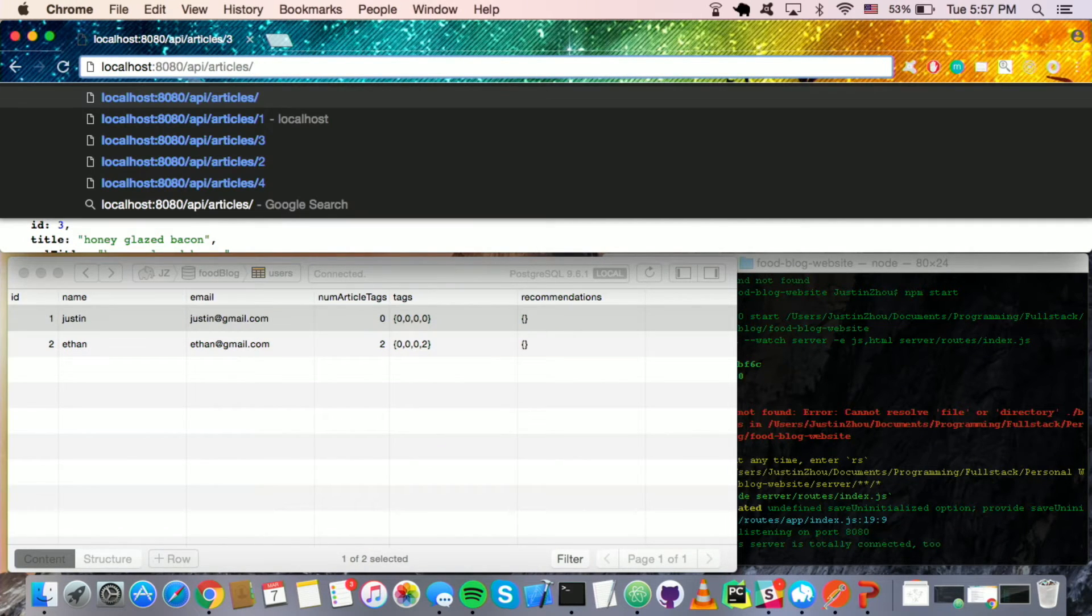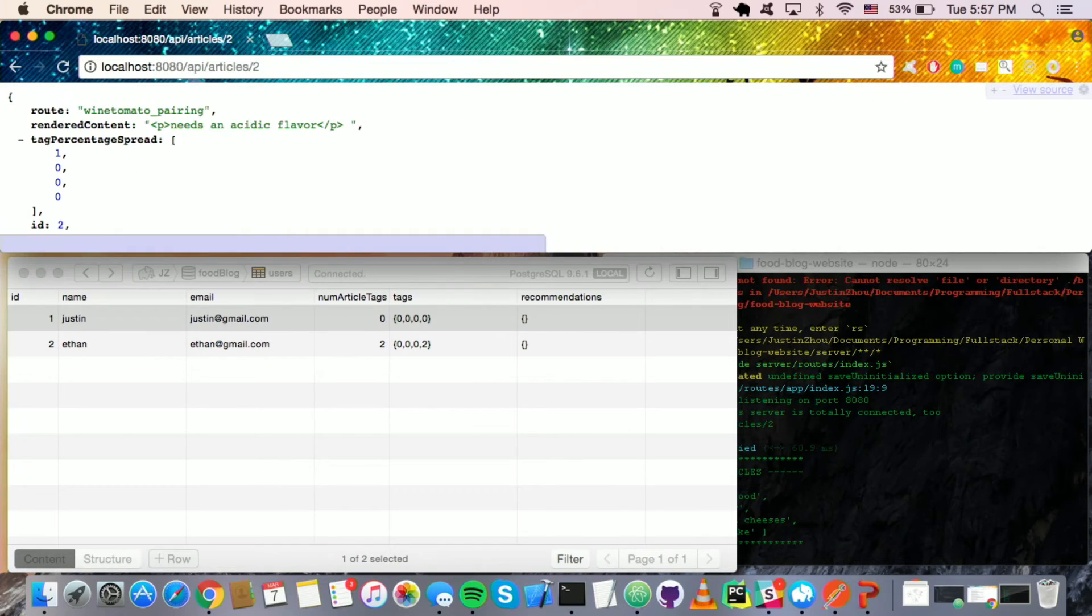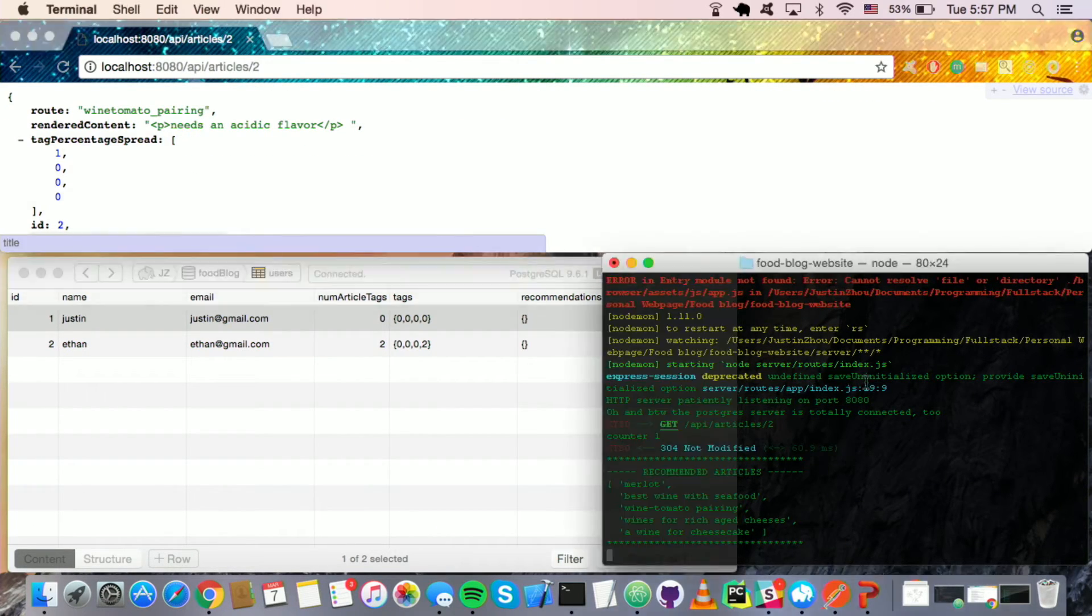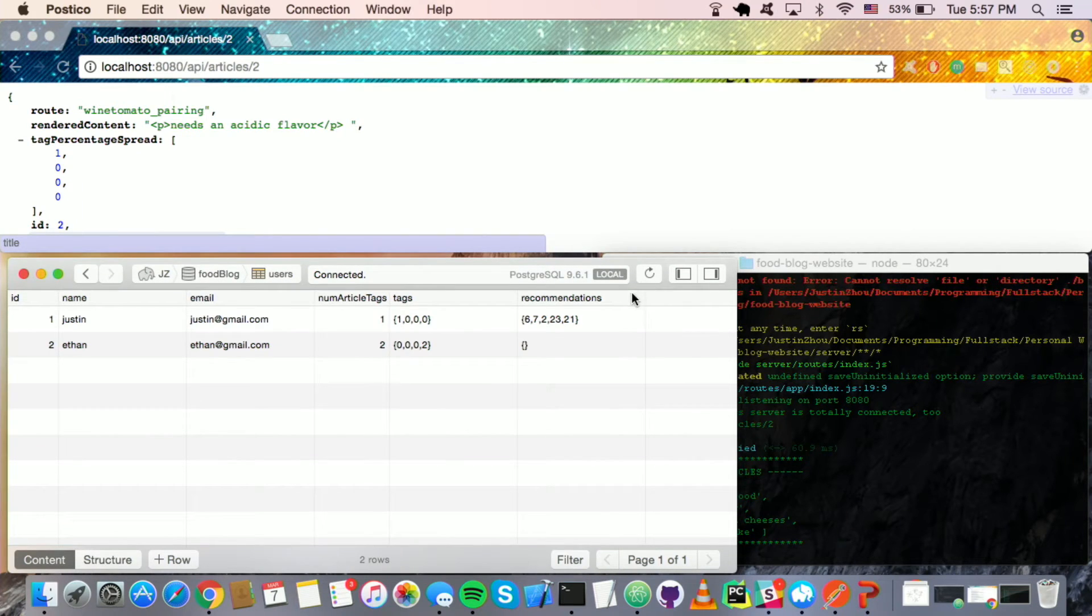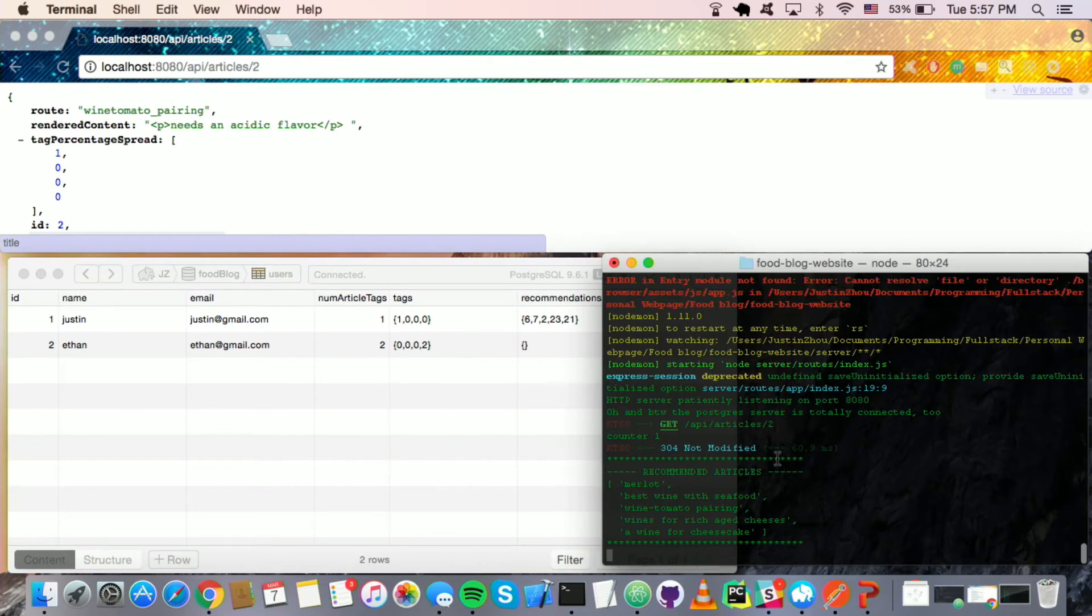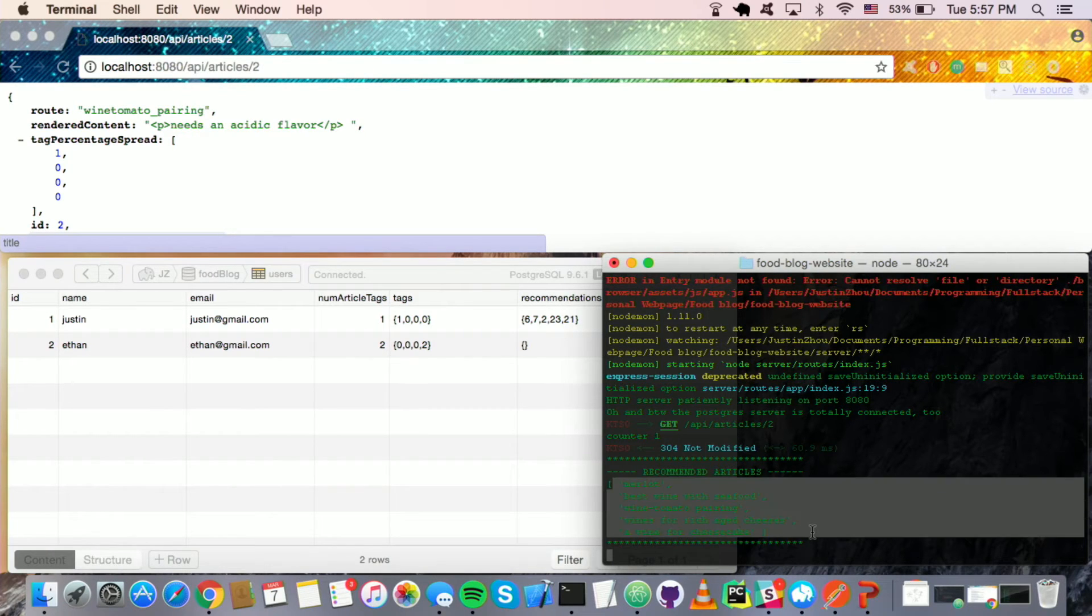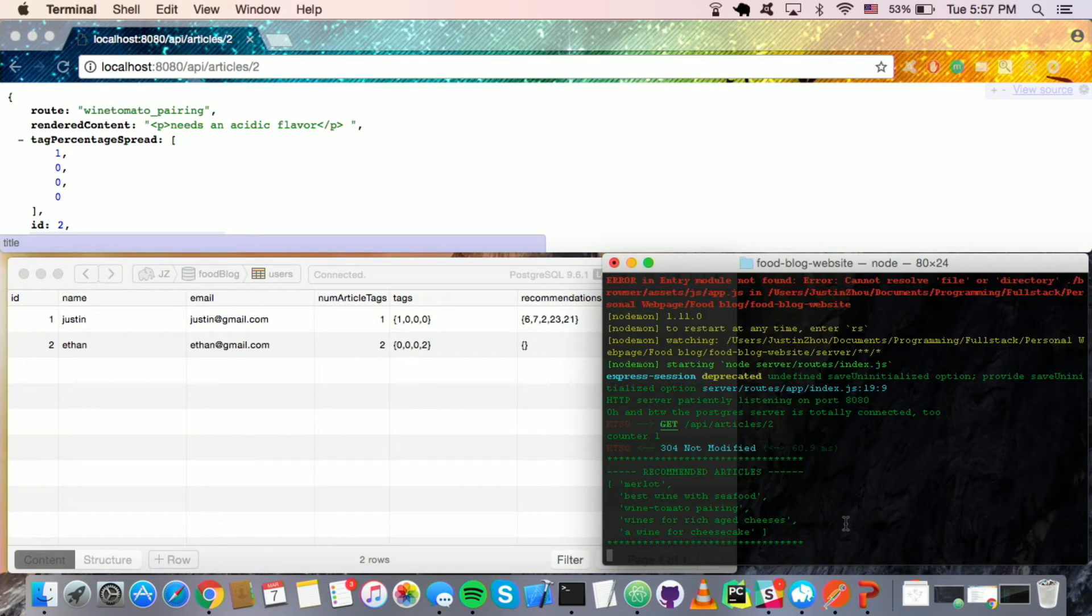So let's say we have Justin read something about, I don't know, let's say wine. So it's an article about wine and tomato pairing. Great. So now if I take a look, it's refreshed. And he has read one article about wine. And so if you look at the console log, it's basically rendered out this list of articles. If you look at them, they're all about wine. Every single last one of them.